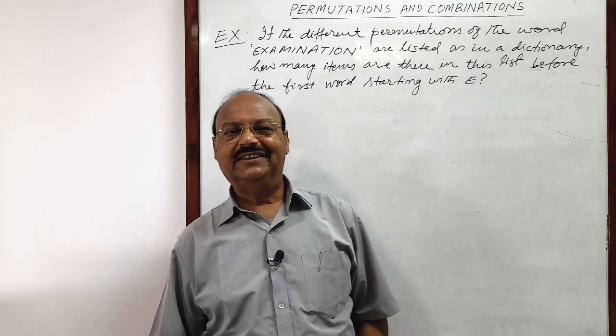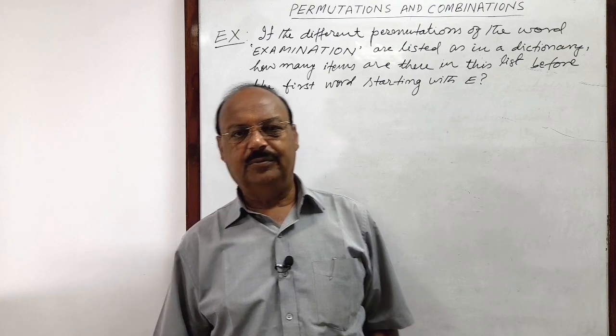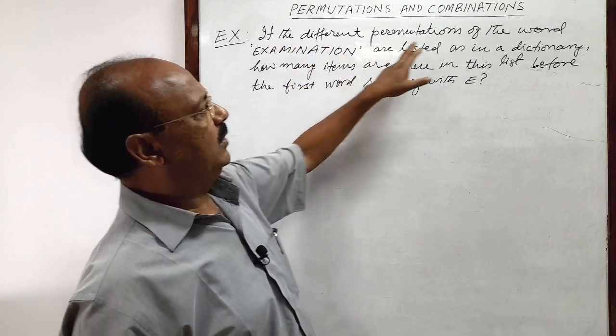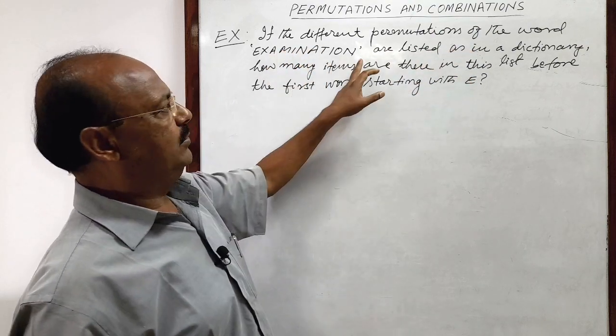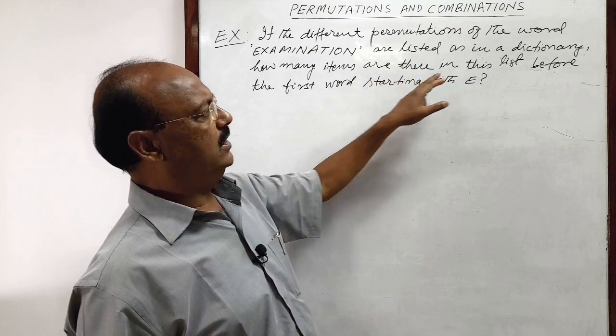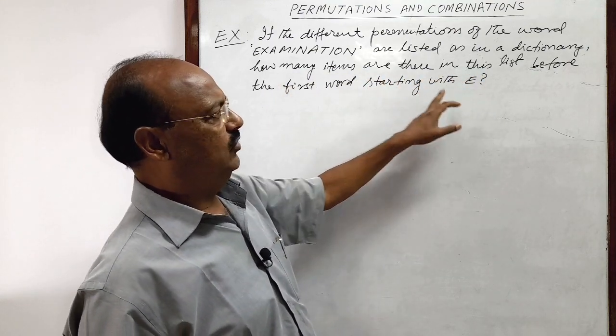Welcome students, here we will be seeing a very interesting question from the chapter permutations and combinations. You see the question first: if the different permutations of the word examination are listed as in a dictionary, how many items are there in this list before the first word starting with E?